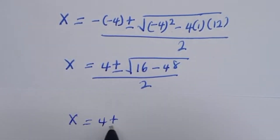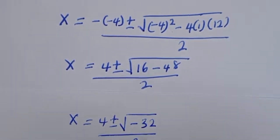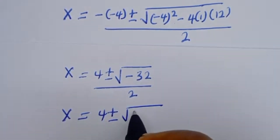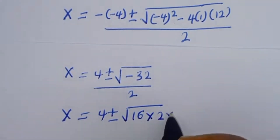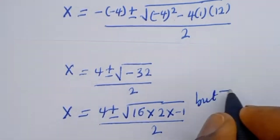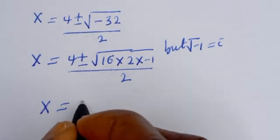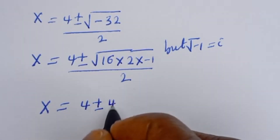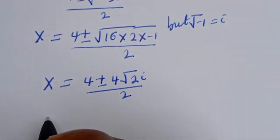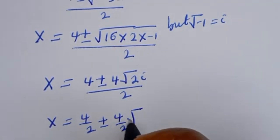So S equals minus bracket minus 4 plus or minus square root of minus 4 squared minus 4 multiplied by 1 multiplied by 12, divided by 2. That gives S equals 4 plus or minus square root of 16 minus 48, which is square root of minus 32, over 2. Now S equals 4 plus or minus square root of 16 times 2 times minus 1, all over 2. Since square root of minus 1 equals i.